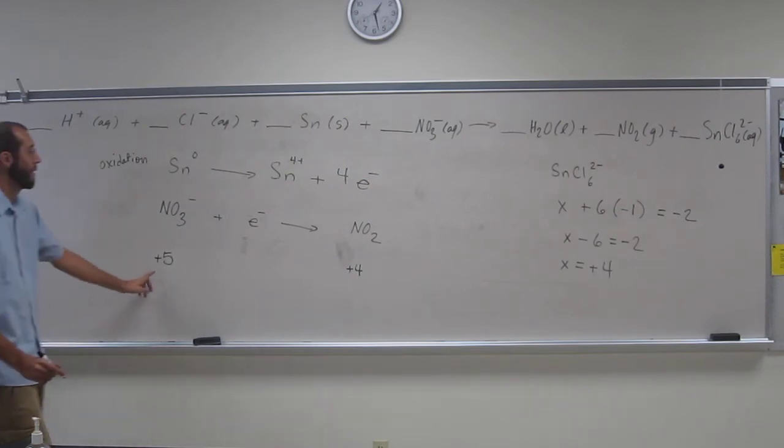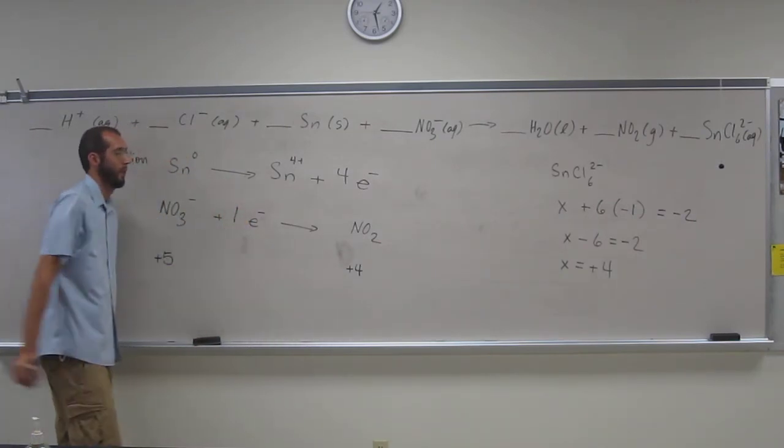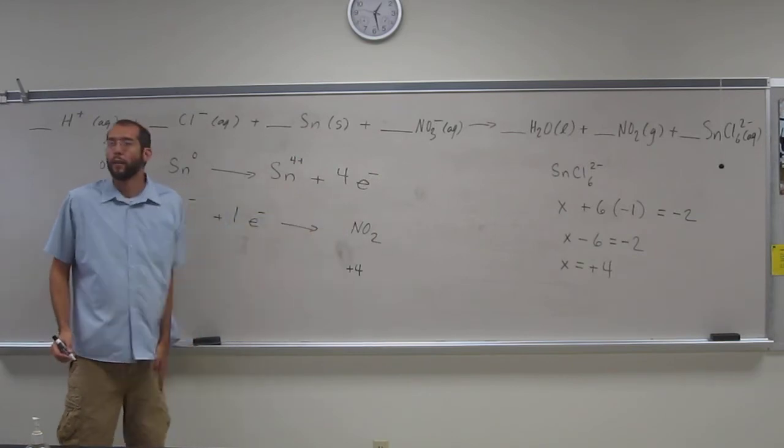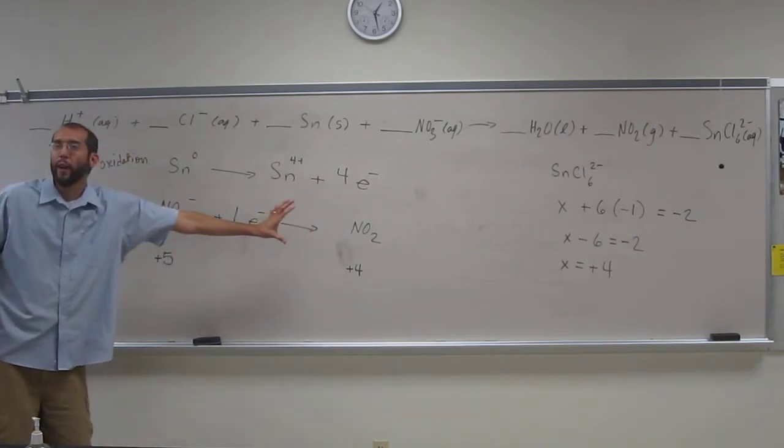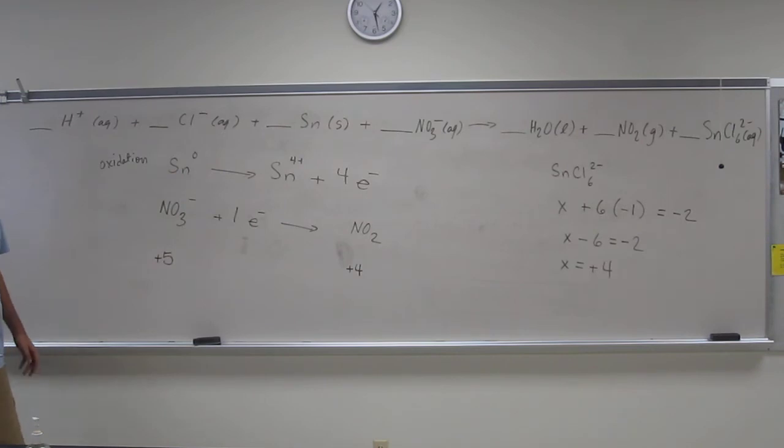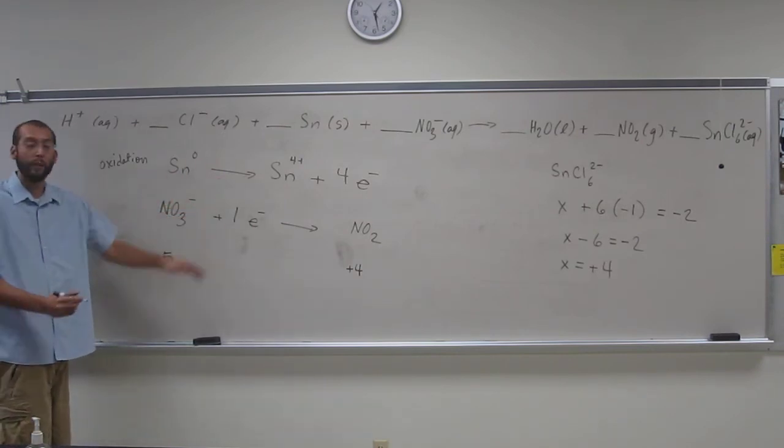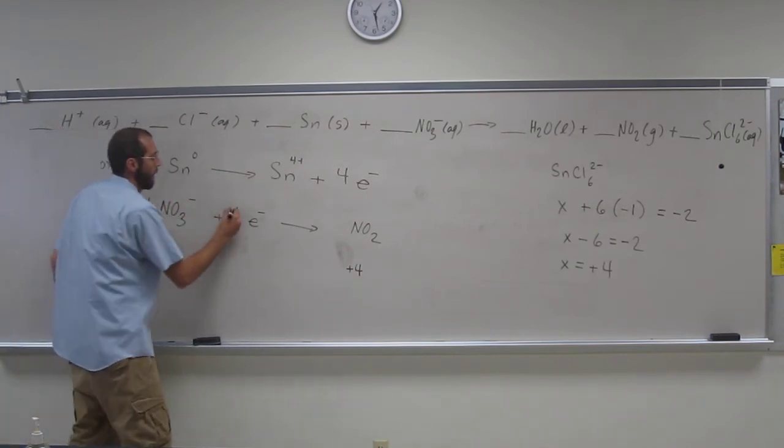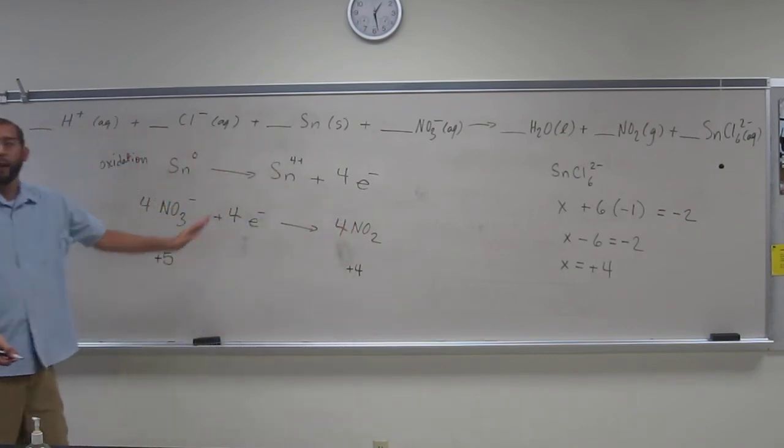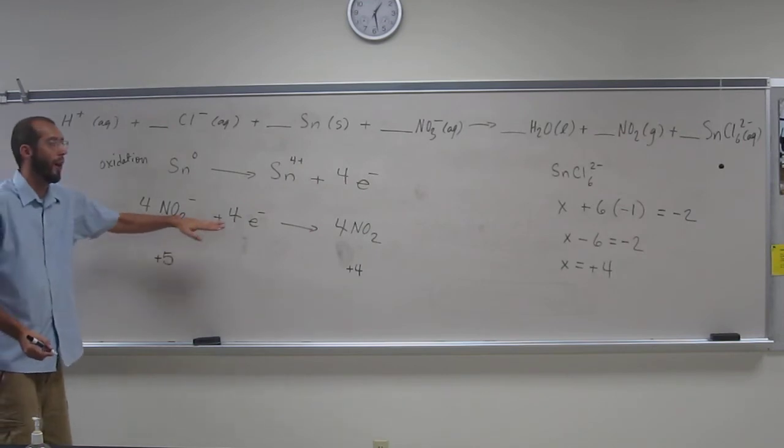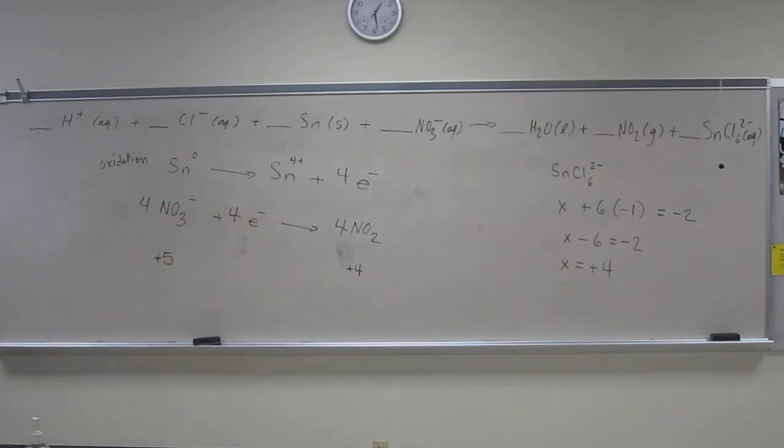So how many electrons? One. So is that the same as that? No. So what do we have to do to this half reaction? Multiply it by four. Is everybody okay with what we're doing? So have we transferred the right amount of electrons? Remember I told you your oxygens won't be balanced at this point in time.